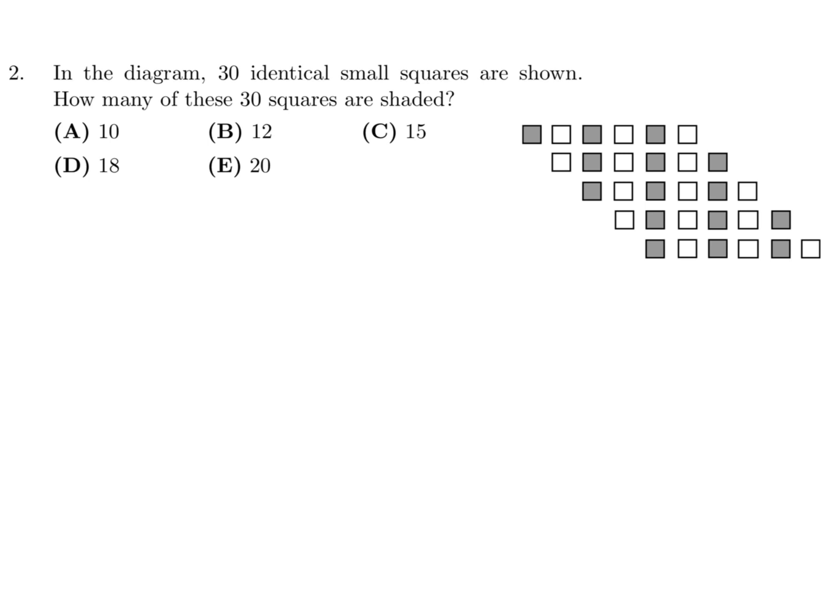In the diagram, 30 identical small squares are shown. How many of the 30 squares are shaded? We'll just count them: 1, 2, 3, 4, 5, 6, 7, 8, 9, 10, 11, 12, 13, 14, 15. So 15 are shaded, therefore number 2 is C.